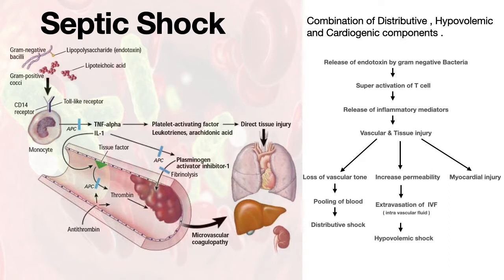Increased permeability causes extravasation, leading to a low volume state. Myocardial injury causes decreased myocardial contractility and thus impaired cardiac functioning.